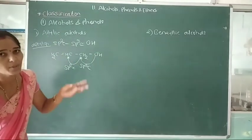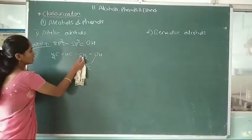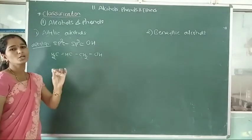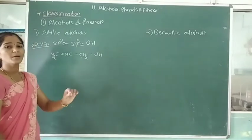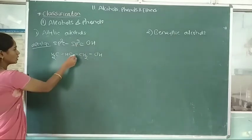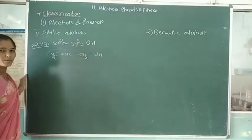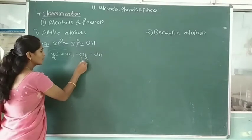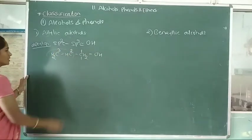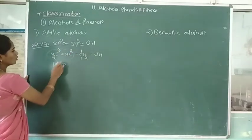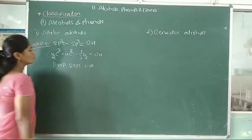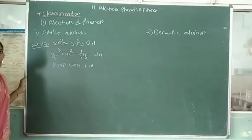Allylic alcohol can be primary, secondary, or tertiary. The example OH–CH2–CH=CH2 is a primary allylic alcohol because the hydroxy group is attached to a primary carbon atom (only one group attached). Name: prop-2-en-1-ol.